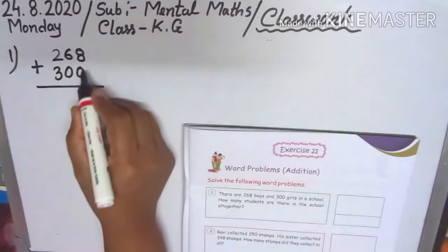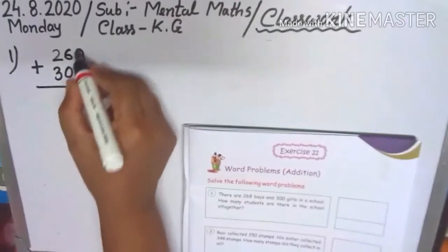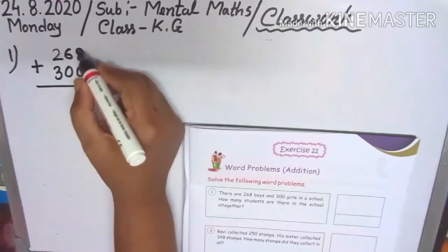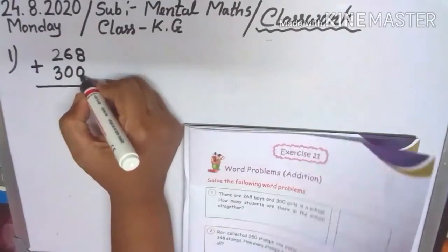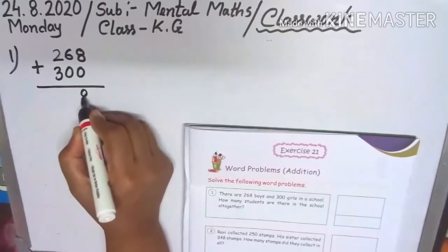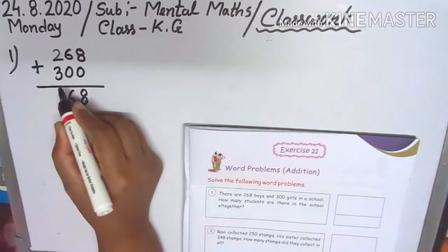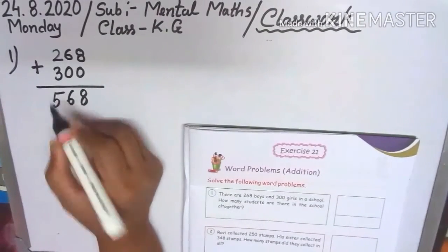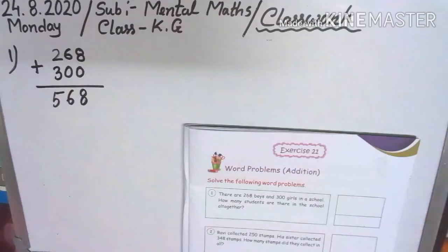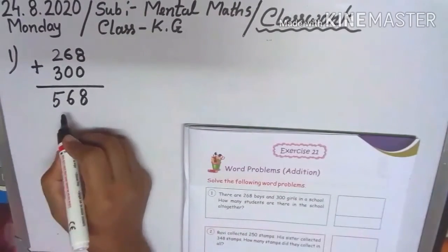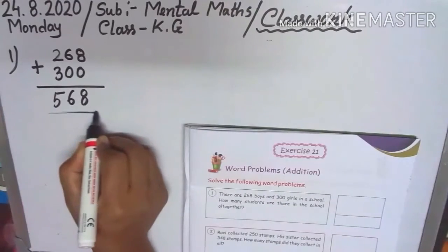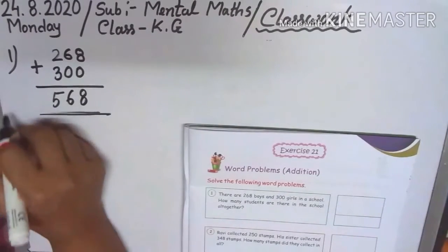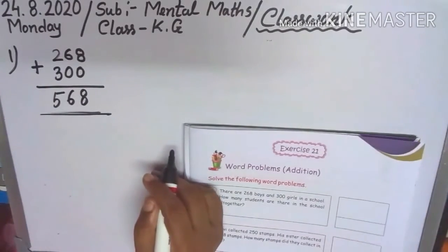So children, 1's column you see 8 plus 0, 8. 6 plus 0, 6. 3 plus 2, 5. So total number of students 568. Answer 568. Number 2.